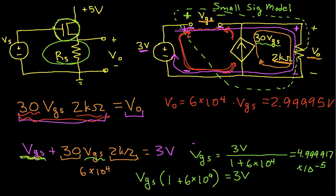Okay, so what we found then is that this voltage here is 2.99995 volts. It's almost exactly the same as this 3 volts. The only thing that makes it different is I have this 1 down here that gets added to the 6 times 10 to the 4th.